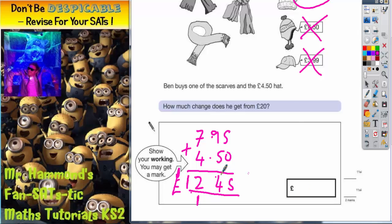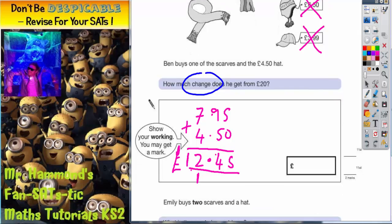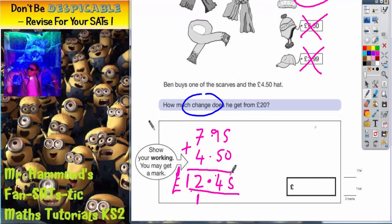But that's not the answer we put in here. The answer we put in here is what change you get from £20. Now there's two ways you can do this. You could count up from £12.45 until you get £20 to see what the difference is.